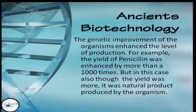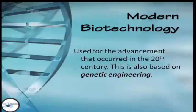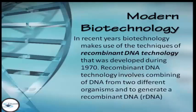For example, the yield of penicillin was enhanced by more than 1,000 times through genetic improvement of organisms. Even so, it was still a natural product produced by the organism. The next type is modern biotechnology, which refers to advancements that occurred in the 20th century and is based on genetic engineering.